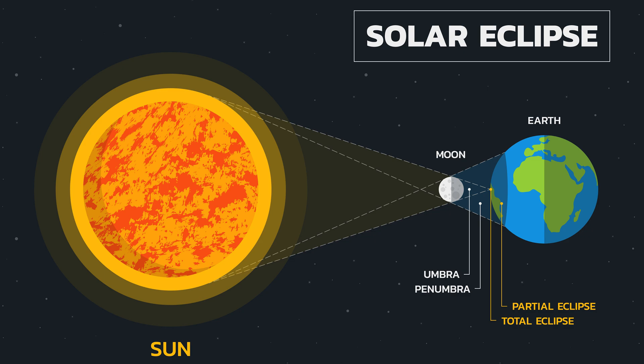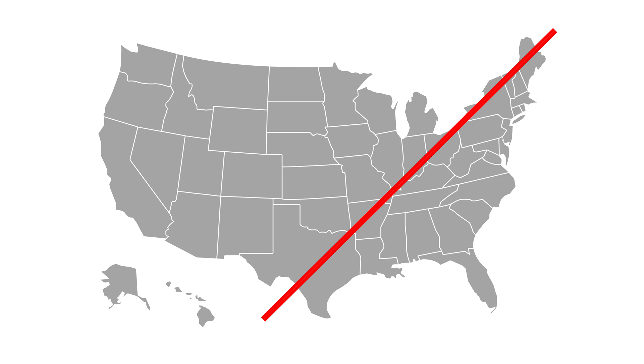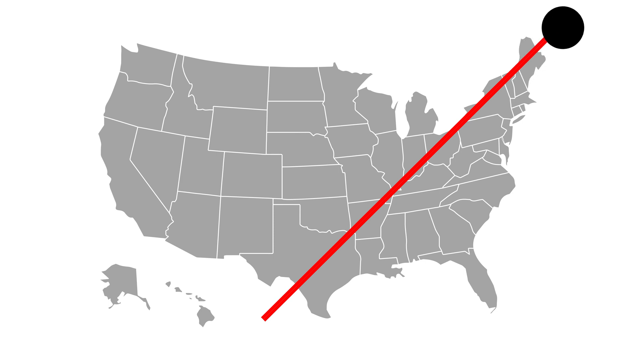The shadow from the Moon is cast on the Earth. The total solar eclipse path in the continental United States starts at the bottom corner of Texas and goes up through the top line of Maine. Viewing-wise, a total solar eclipse is qualitatively different than seeing even a large partial.